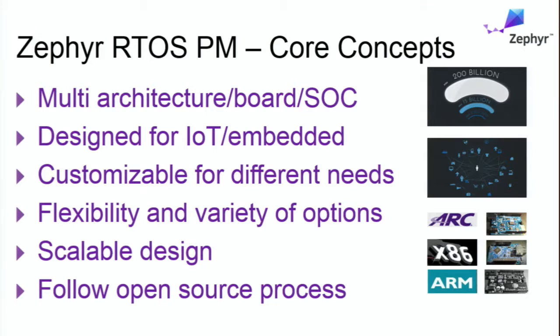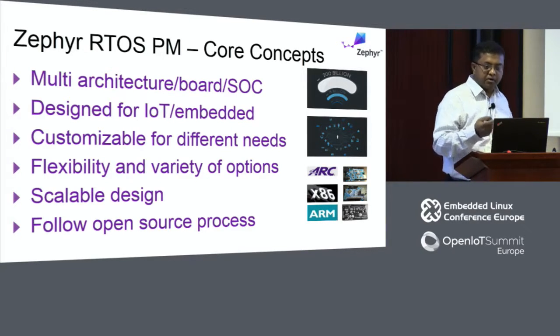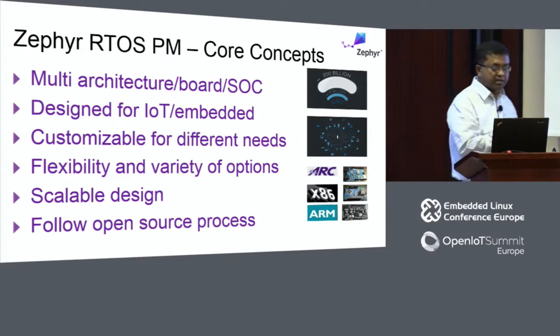Studies centered around the year 2020 looked at the number of connected intelligent devices. There are different numbers — one I found is 200 billion, others say 50 billion. Whatever the number, it is in the billions. When you think about these numbers, it is reasonable to expect a lot of diversity — a lot of different ways of doing things, multiple architectures, people coming from different backgrounds. This is already the case, and it's going to get more diverse. So the Zephyr power management, like the Zephyr RTOS core, has multiple architecture support as the main design goal. You should be able to write a power management solution on one architecture and move it to another very easily.